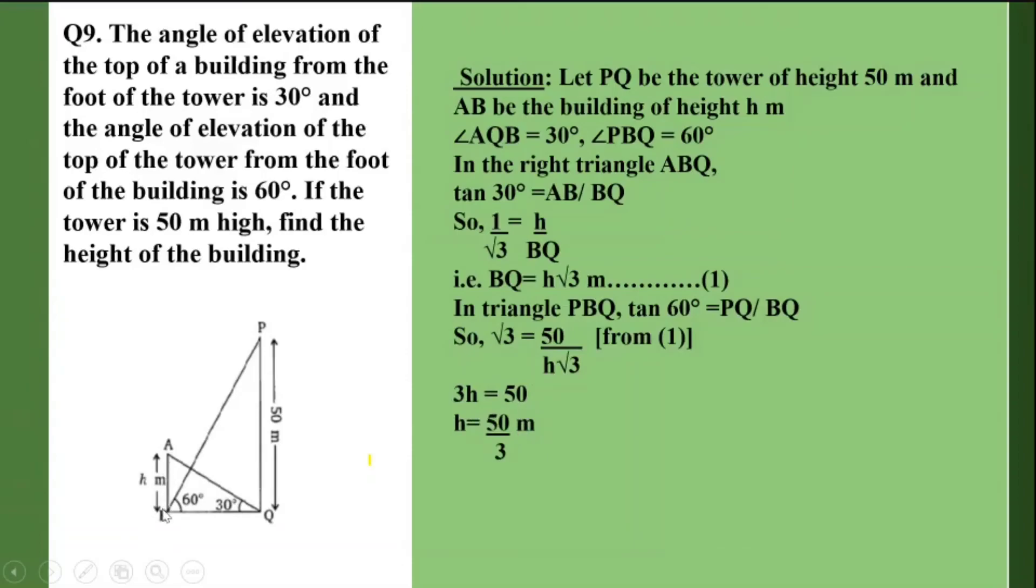I've got the value of h as 50 by 3 meters. So the height of the building is 50 upon 3 meters. I'll write the answer as the height of the building is 16.67 meters. So I hope it is clear to you. Thank you so much. Bye.